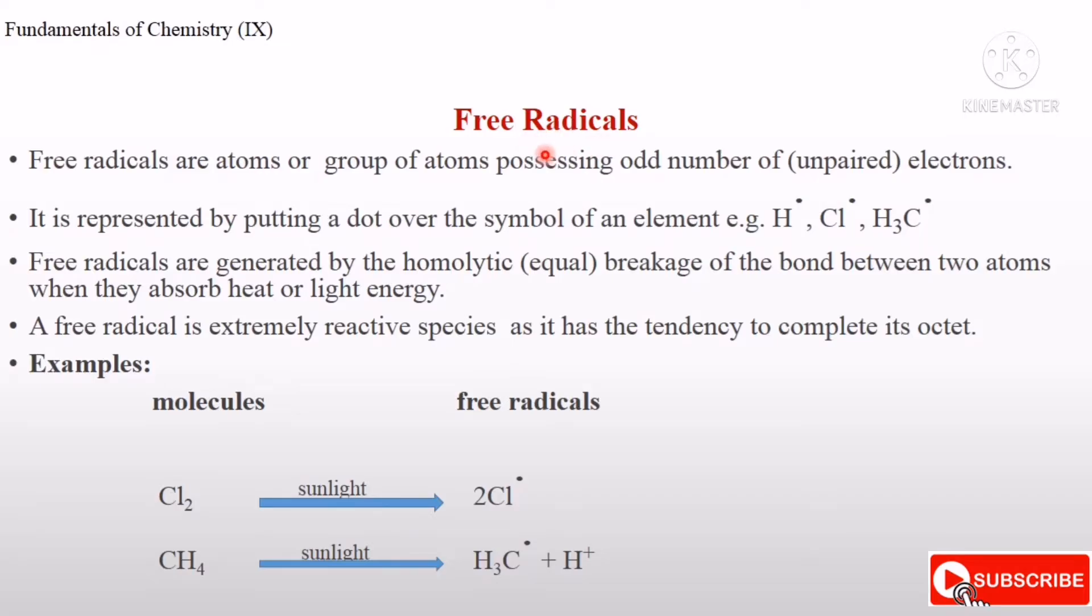What is free radical? Free radicals are atoms or group of atoms possessing odd number of electrons. Odd number means unpaired electrons. So the free radicals are represented by putting a dot over the symbols of elements.